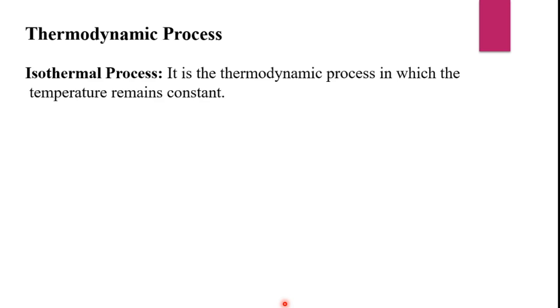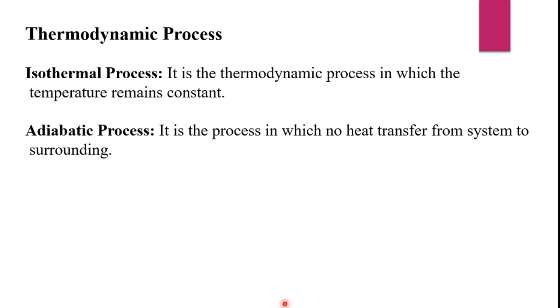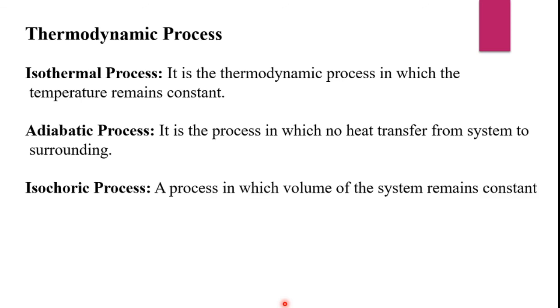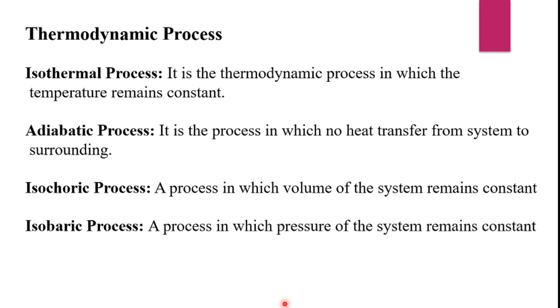Now we are going to see thermodynamic processes. The first one is isothermal process: a thermodynamic process in which the temperature remains constant. Next is adiabatic process: the process in which no heat is transferred from the system to the surrounding. Next is isochoric process: a process in which the volume of the system remains constant. Next is isobaric process: a process in which pressure remains constant. To summarize — isothermal: temperature constant; adiabatic: no heat transferred; isochoric: volume constant; isobaric: pressure constant.